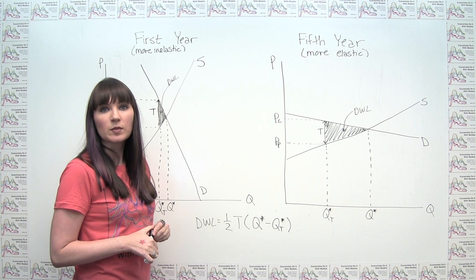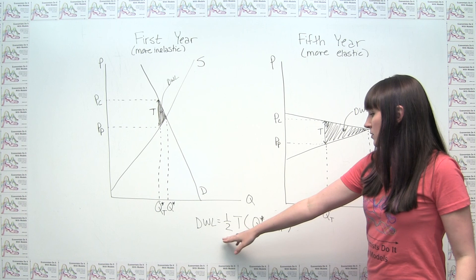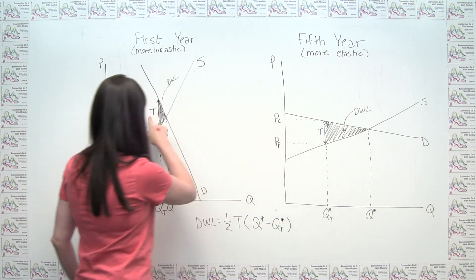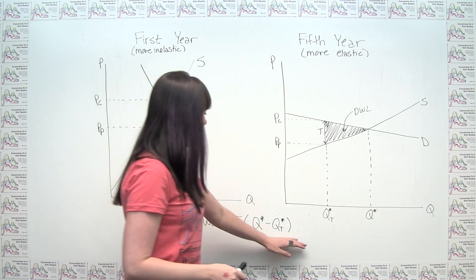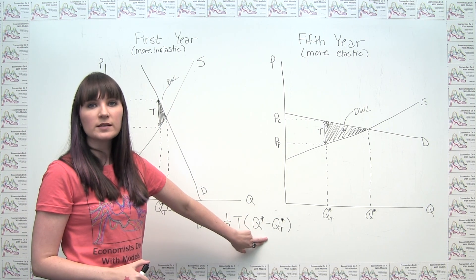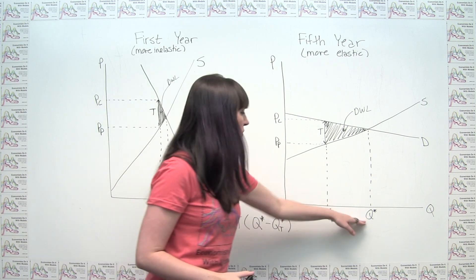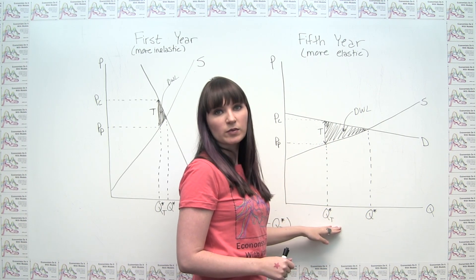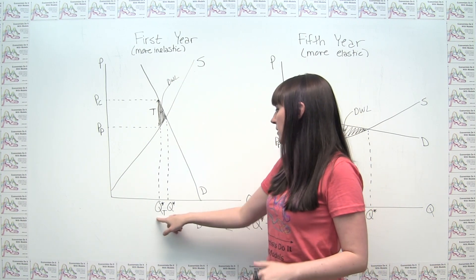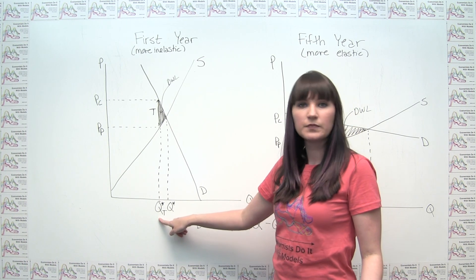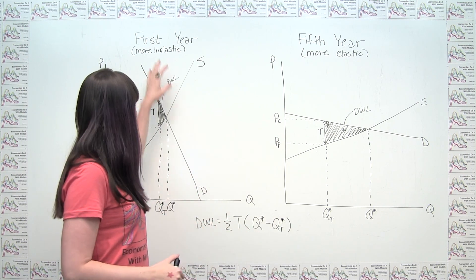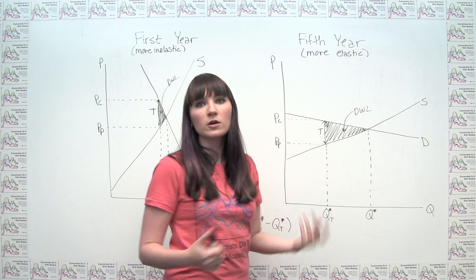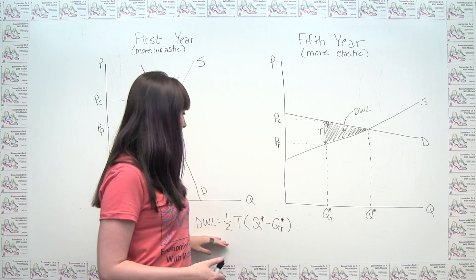This formula gives us more insight. In both cases, one-half is still one-half, and the size of the tax is the same — that's how we set up the problem. So the thing causing the difference in triangle sizes is how much the quantity transacted changed once the tax was put in place. Not surprisingly, more elastic supply and demand will make the quantity decrease more when a tax is imposed. In the first year with more inelastic markets, the quantity change is smaller, so deadweight loss is smaller. In the fifth year with more elastic supply and demand, the quantity difference is bigger, so deadweight loss is bigger.